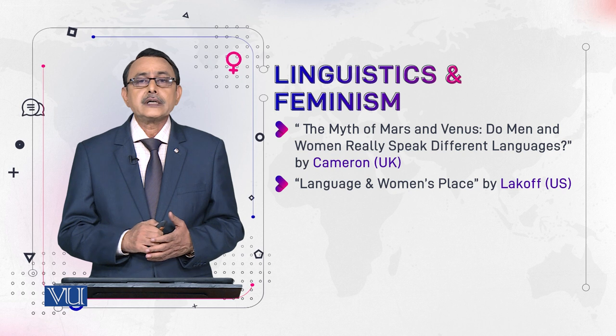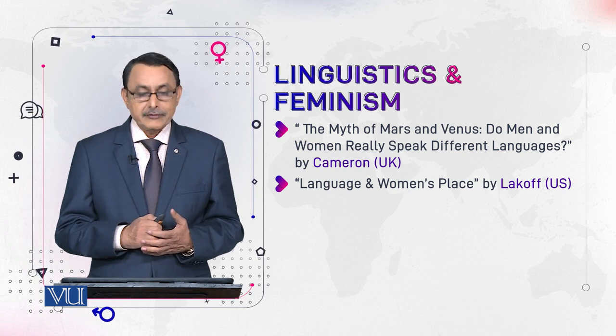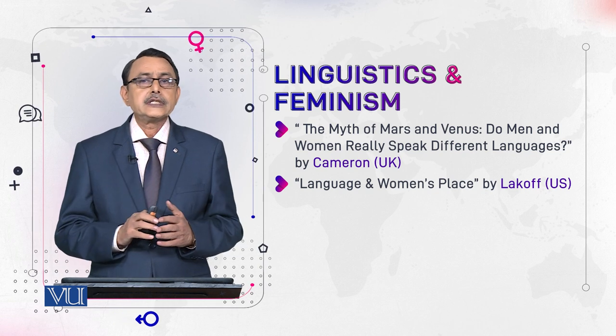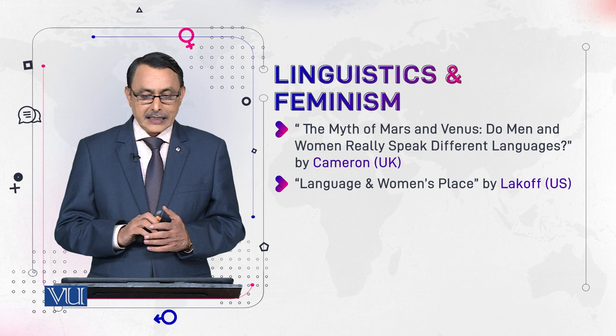Another gender scholar and feminist linguist is Robin Lakoff, from the US. Her book Language and Women's Place is one of the foundational works written in this field. She tells us that women's language is polite, and that this politeness — along with specific features of their language — actually provides males an opportunity to dominate them. Her point of view is that women are weak because their language is weak.